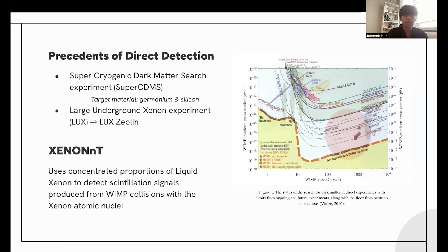The Luke Zeppelin experiment, Large Underground Xenon Experiment, more directly coincides with the Xenon-NT because it also uses liquid Xenon as its target material. In terms of Xenon-NT, it uses concentrated proportions of liquid Xenon to detect scintillation signals produced from WIMP collisions with the Xenon atomic nuclei, which we'll explore later.